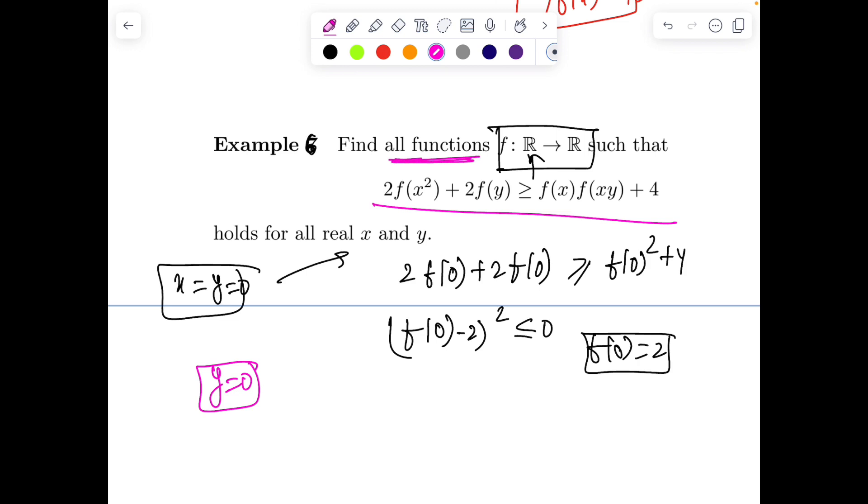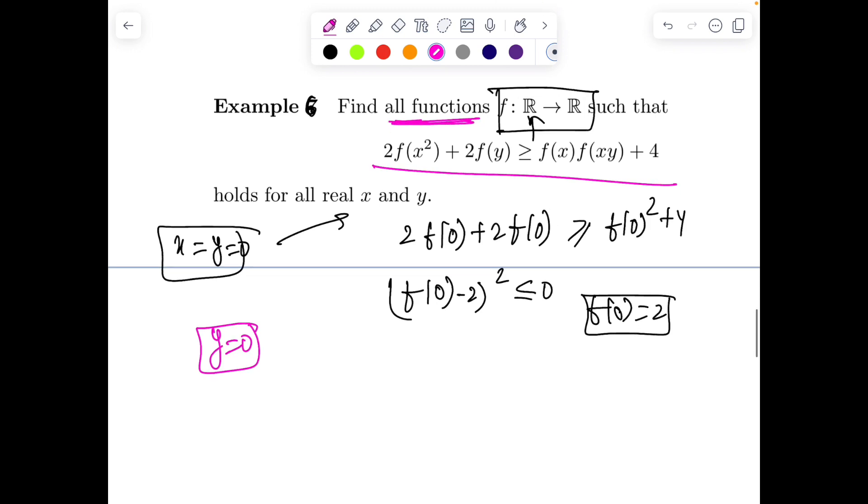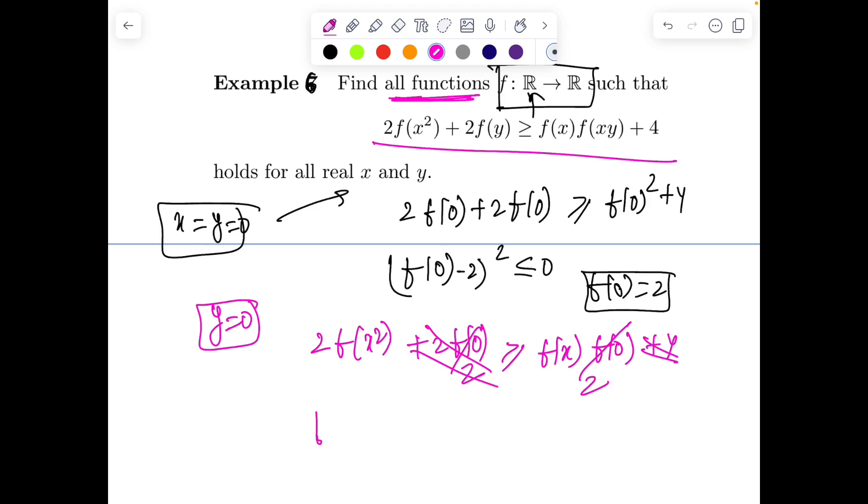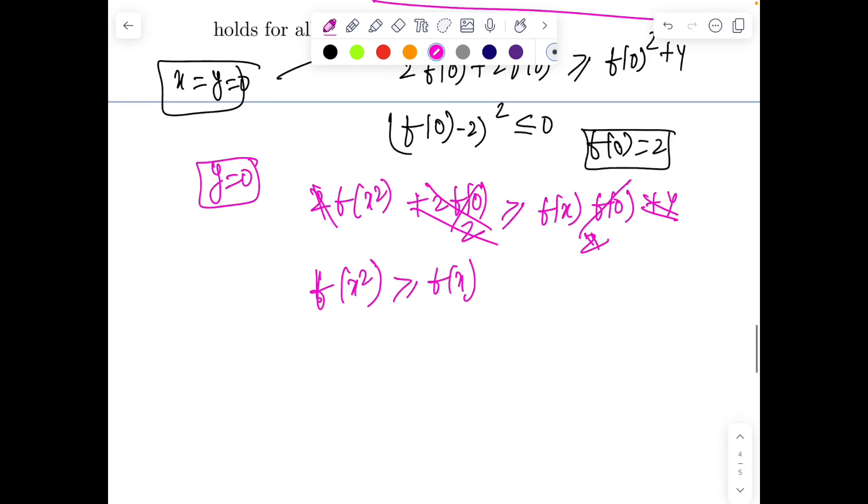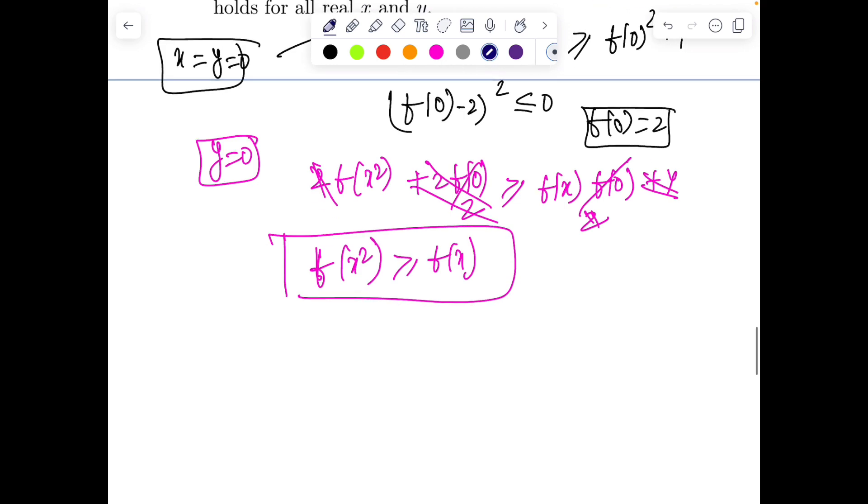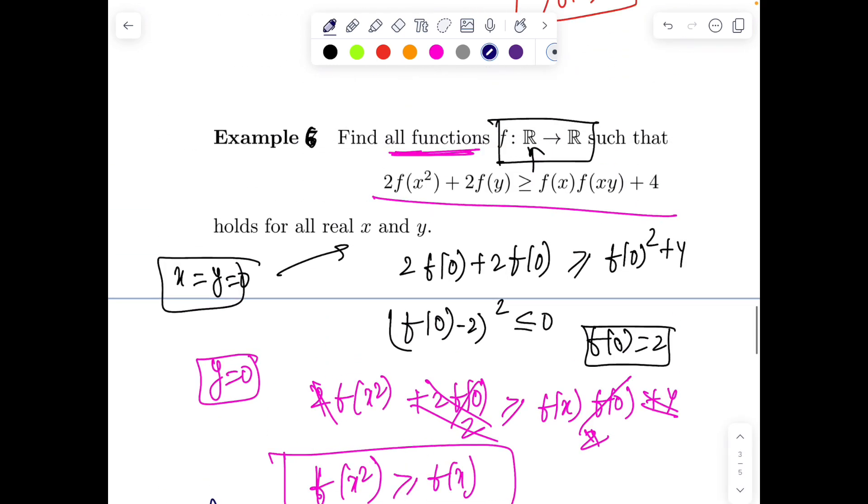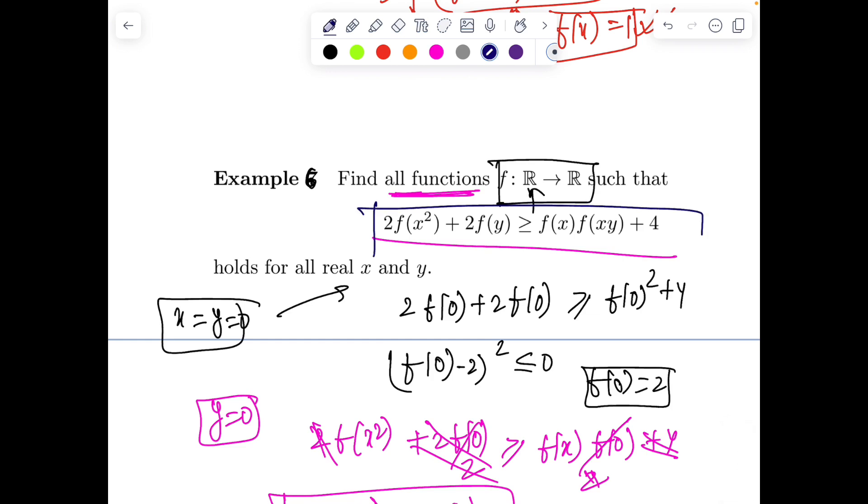Put y = 0. Then 2f(x)² + 2f(0) = f(x)·f(0) + 4. Substituting f(0) = 2 gives 2f(x)² + 4 = 2f(x) + 4, so f(x)² = f(x). Now put x = 0 instead of y = 0. This expression is not symmetric in x and y, so x = 0 will give different information.